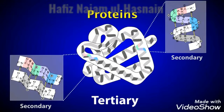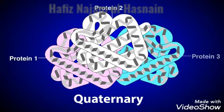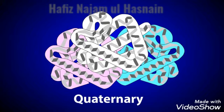In some cases, proteins can form quaternary structures, which consist of interactions between multiple proteins. These interactions often result in the formation of large protein complexes. Examples of proteins that have quaternary structures are hemoglobin and the sodium channels in the cell membranes.